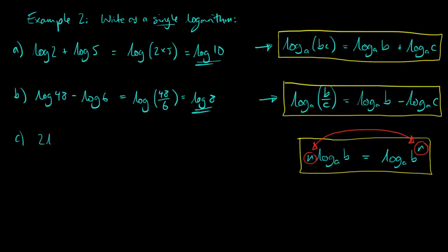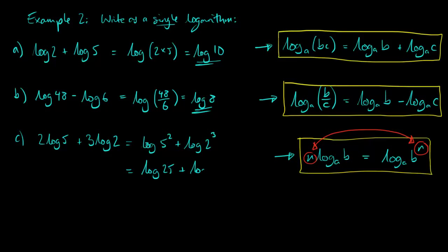A slightly harder example: 2 log 5 plus 3 log 2. We use the power rule first because we can only add single logarithms together. 2 log 5 becomes log of 5 squared, and 3 log 2 becomes log of 2 cubed. Replacing 5 squared with 25 and 2 cubed with 8, we apply the multiplication-addition rule and simply do 25 times 8, giving the answer log of 200.